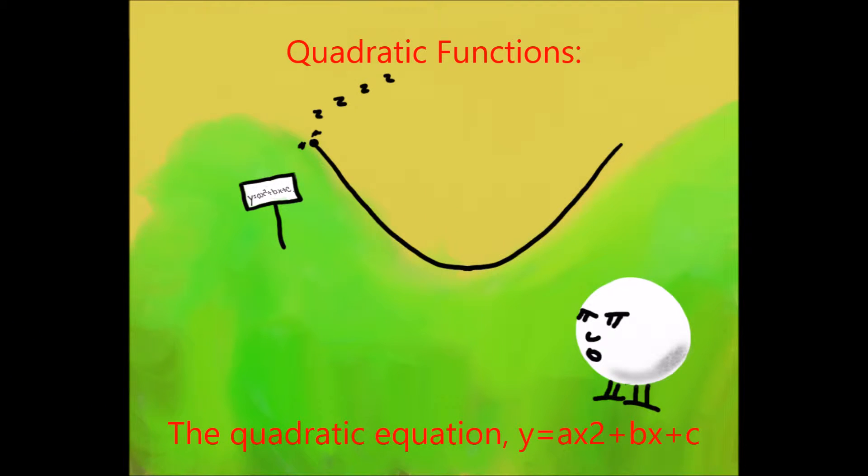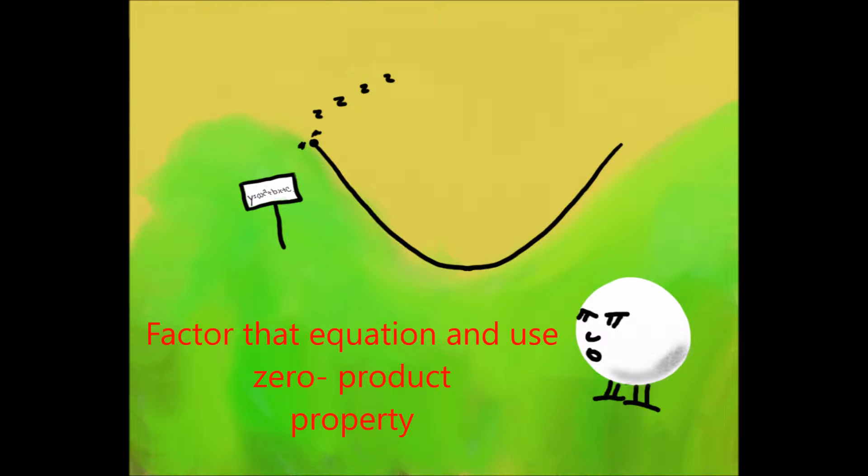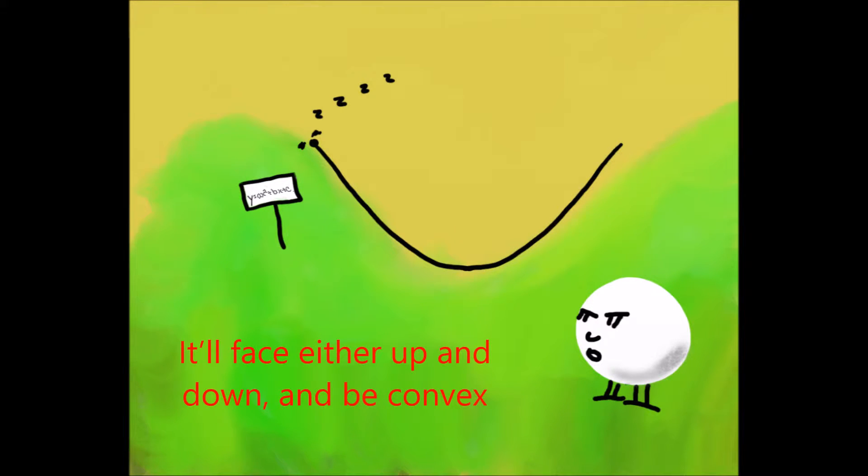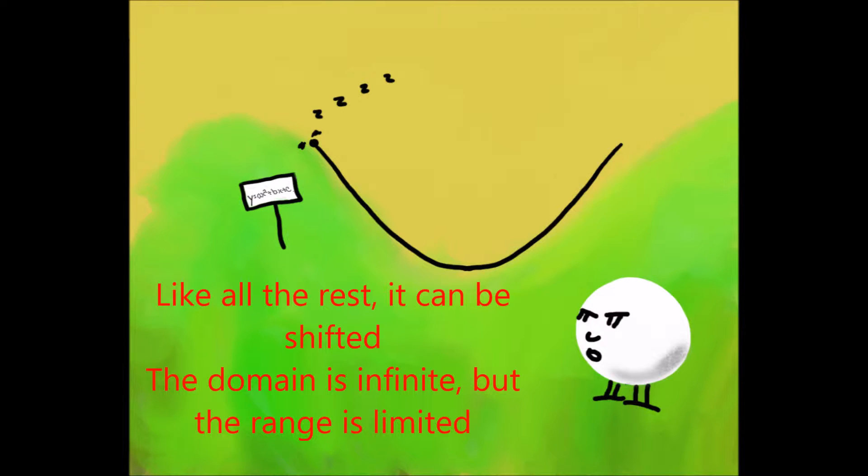The quadratic function, y equals ax squared plus bx plus c, factor that equation and use the zero product property. To graph a parabola, you need two zeros and a vertex. It'll face either up or down and be convex. Like all the rest, it can be shifted. The domain is infinite, but the range is limited.